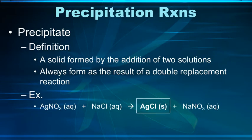So a precipitate, we've seen this definition before. It's a solid formed by the addition of two solutions. Keyword, it's a solid by two solutions, meaning two things that are aqueous. It always forms as the result of a double replacement reaction.